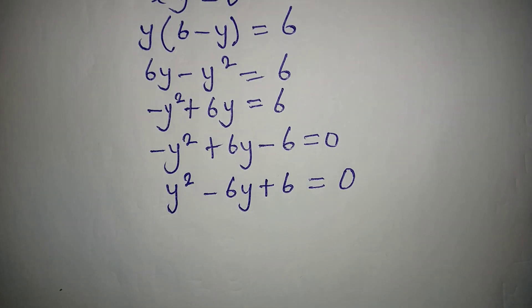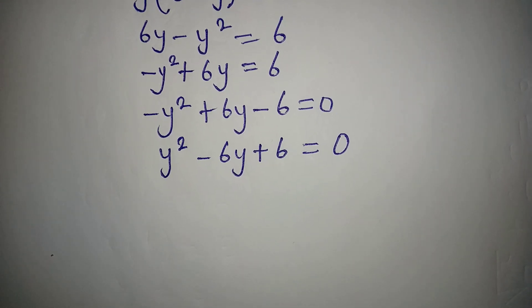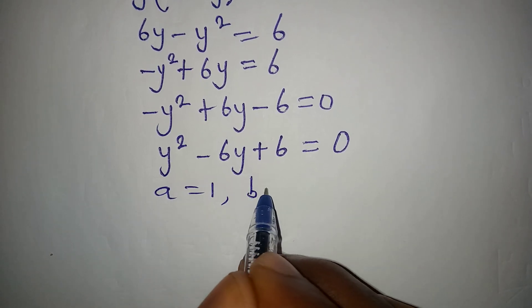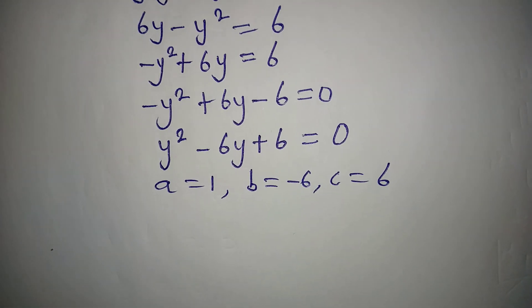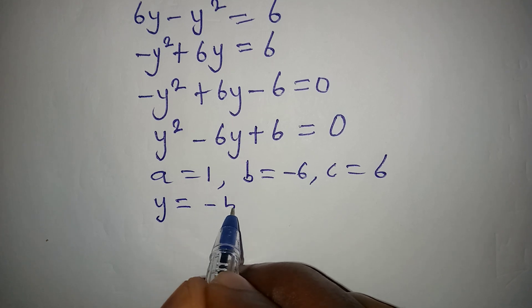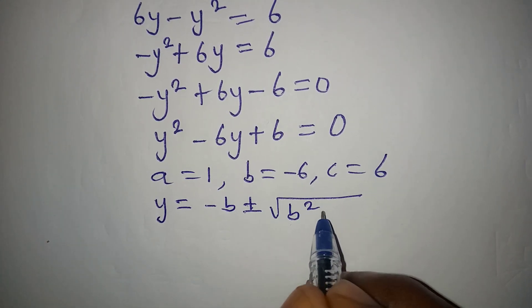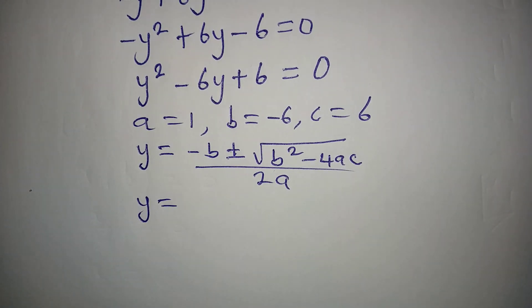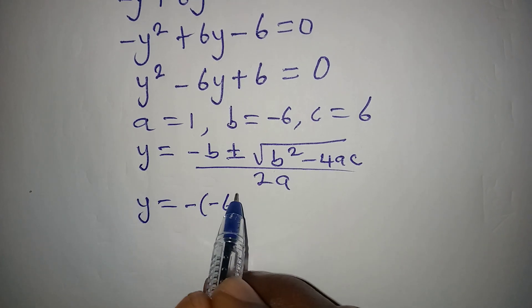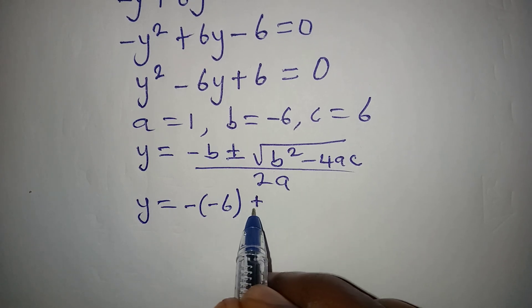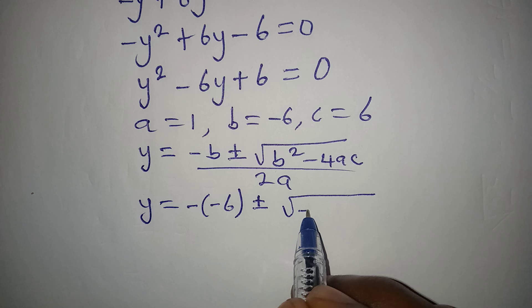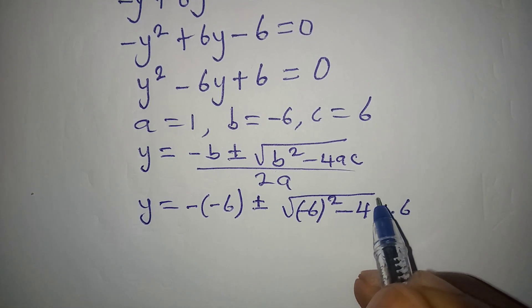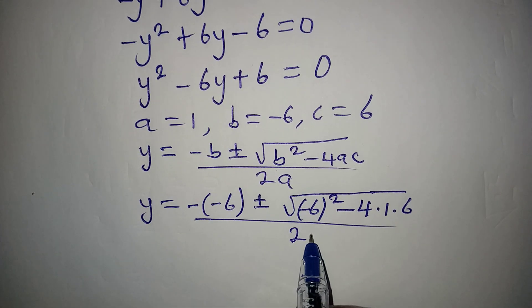Multiplying negative by 0 still gives 0. Now we have a quadratic equation we can solve using the formula method. Our a is 1, b is minus 6, and c is plus 6. The formula is y equals negative b plus or minus the square root of b squared minus 4ac, all over 2a. So y equals negative of negative 6, plus or minus the square root of (negative 6) squared minus 4 times 1 times 6, all over 2 times 1.